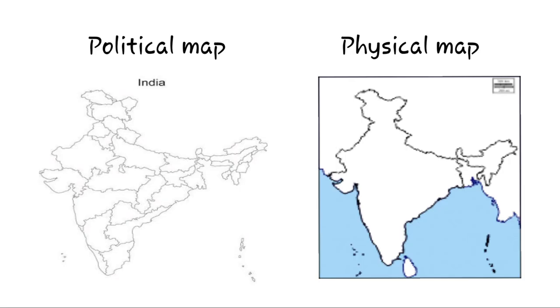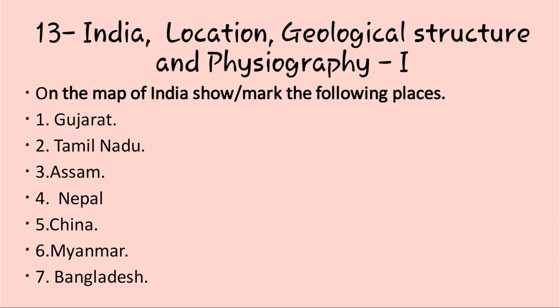Here we are having a political map and a physical map. In a political map, the states will be marked thoroughly and properly. But in a physical map, only the outline of the country is given, and you are supposed to mark according to your correct knowledge. The first map we are going to mark is from Chapter 13 — India: Location, Geological Structure and Physiography Part 1. You are supposed to learn the location of each and every state in our country.